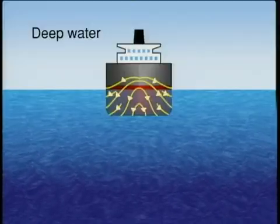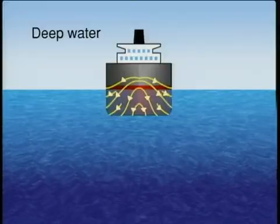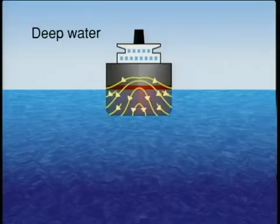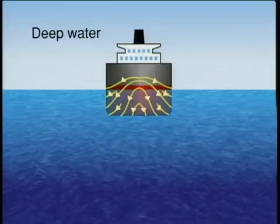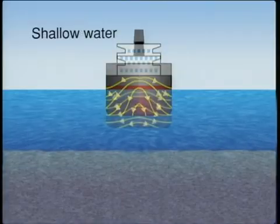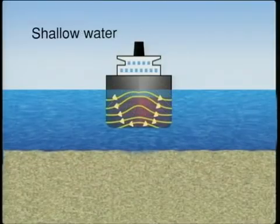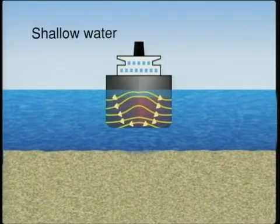In shallow water where the bottom clearance is comparatively small, the ratio of the horizontal flow along both sides of the ship increases because the current towards the bottom is restricted.